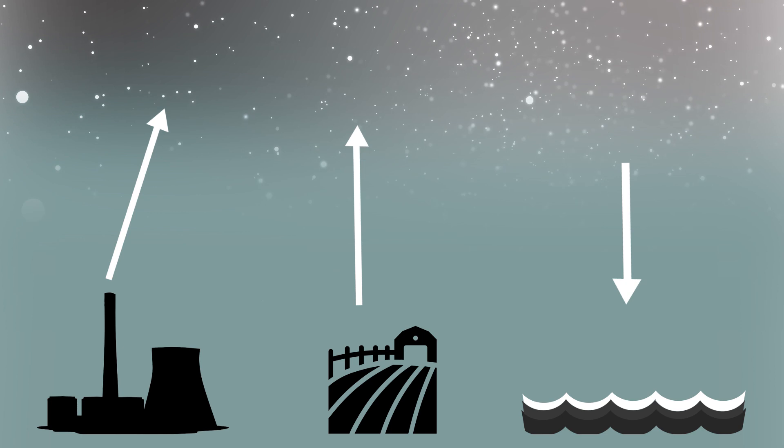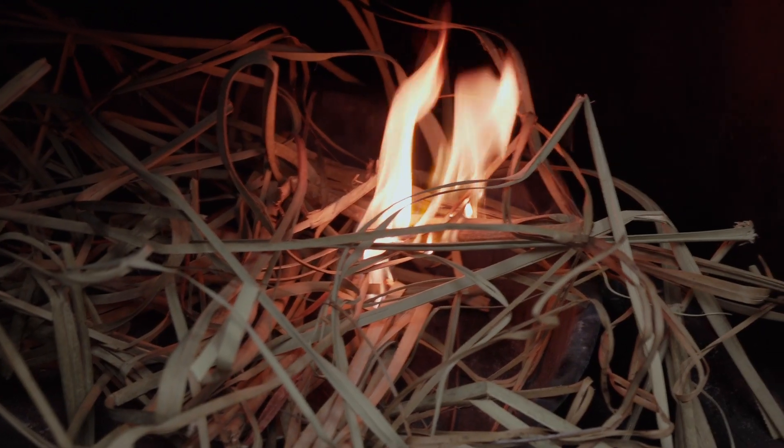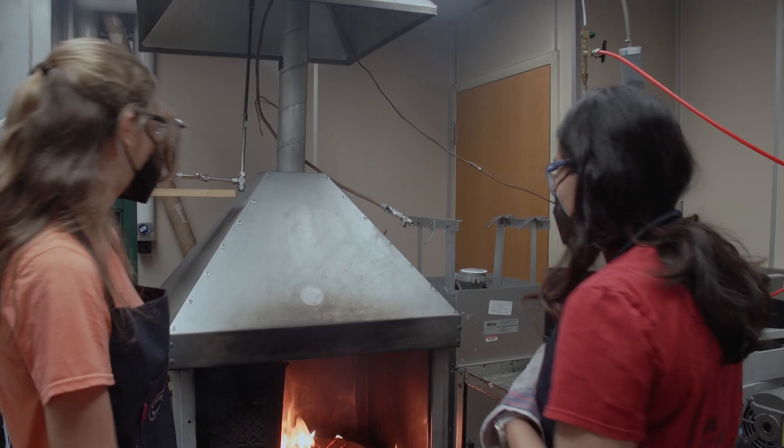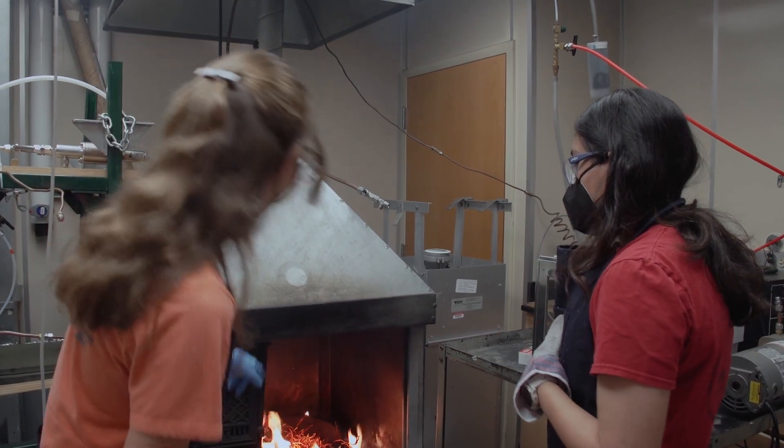All these compounds get cycled around and around. Our research is trying to understand what is happening in the cycle and where it is getting unbalanced. We want to know why it's getting unbalanced so we can change how we live and interact with the planet, so we don't unbalance it and the planet can continue to be a happy place for us to live.